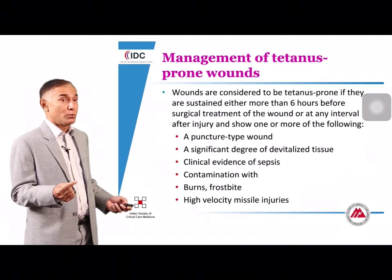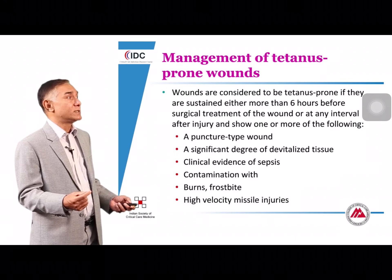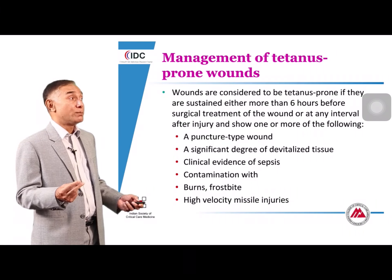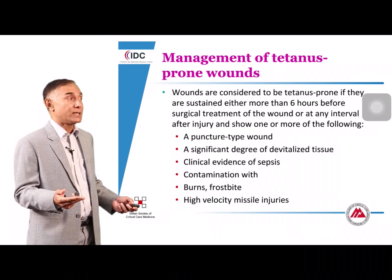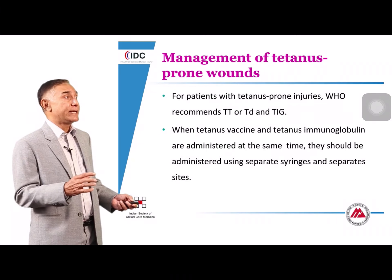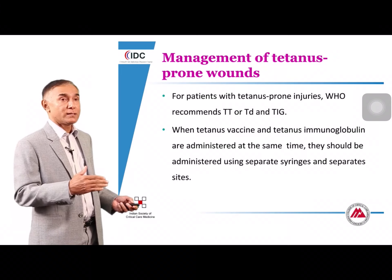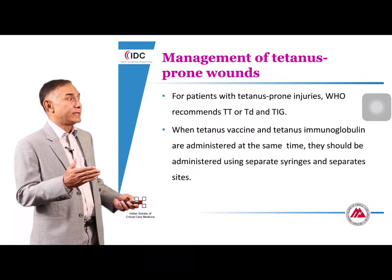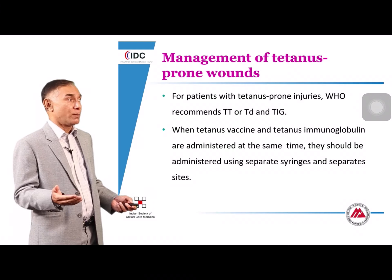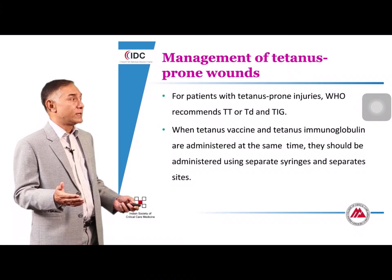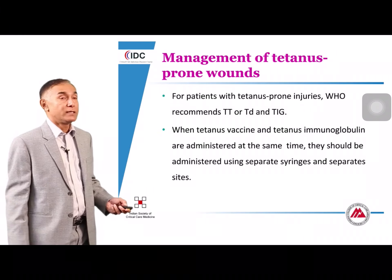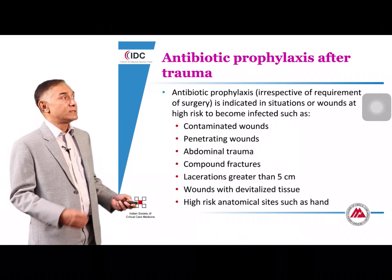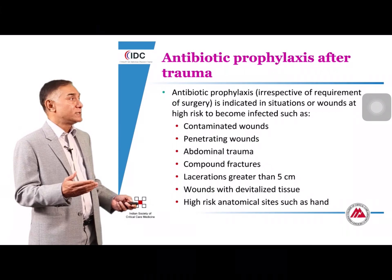Management of tetanus-prone wounds is important for ICU physicians. Puncture-type wounds, contaminated wounds, and high-velocity missile injuries are all indications for tetanus prophylaxis. Tetanus prophylaxis consists of tetanus toxoid or tetanus-diphtheria toxoid for lower risk, and tetanus immune globulin for high-risk patients. If both are given, they should be administered at different sites.